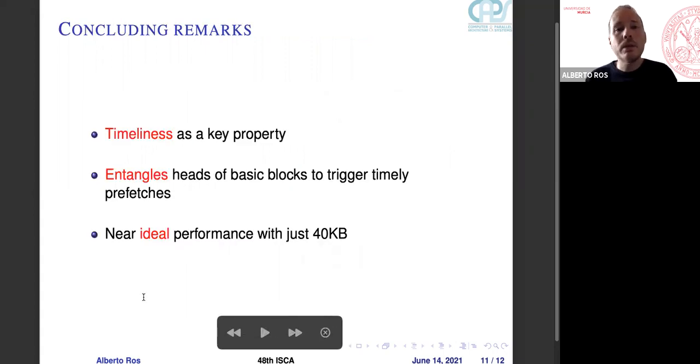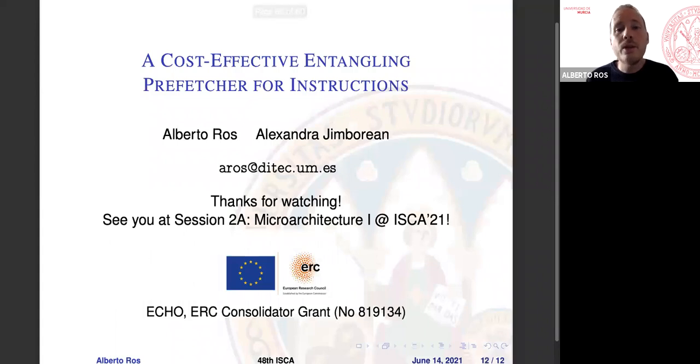So as a conclusion, timeliness is a key property for prefetching. Our prefetcher entangles heads of basic blocks to trigger timely prefetches, and it obtains near ideal performance with just 4 kilobytes of extra storage. Thank you for watching, and I'll be happy to see you at session 2A Microarchitecture 1 at ISCA 21. Thank you again.